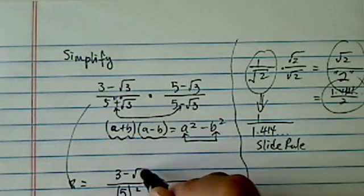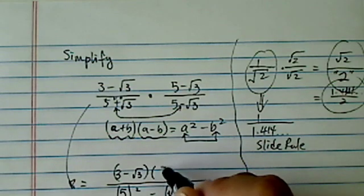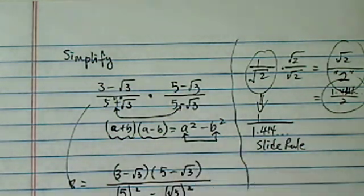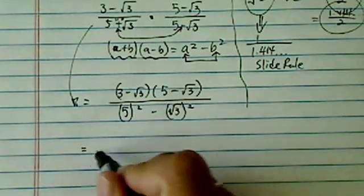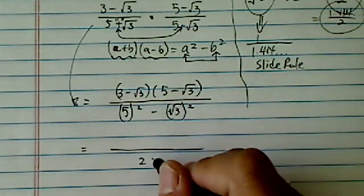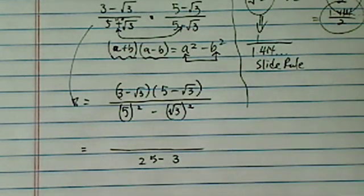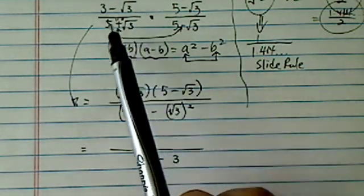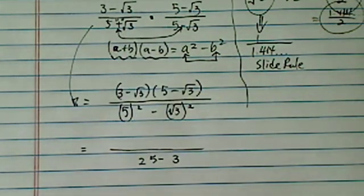Now on the top, let's just write it down for now, and then we will have to open it up using foil. On the bottom we have 25 minus 3, which is 22. Much prettier number than 5 plus radical 3, what we had before.